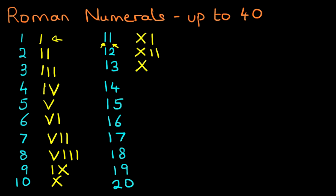Thirteen is X-I-I-I. Fourteen is, we do the ten first and then we do the four. How do we do four? Well, it's one before five: I-V. Fifteen is X-V.